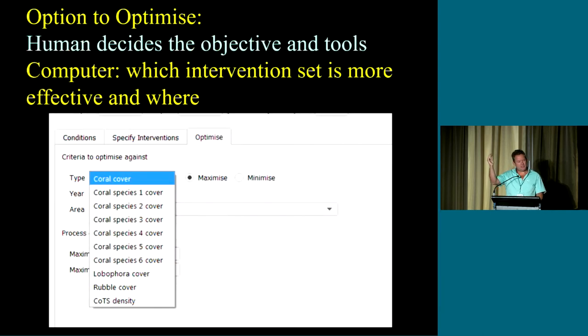You can then run those scenarios and compare them one against another or you can do some sort of simple optimization where the human designs a series of interventions and says well this is the question, this is what we're trying to do. But then ask the computer to try and find good options that try to achieve that. That's something we've built in. You can optimize on the type of coral, the density of COTS, whatever you like.